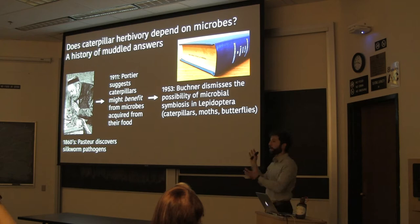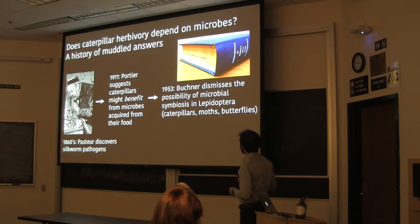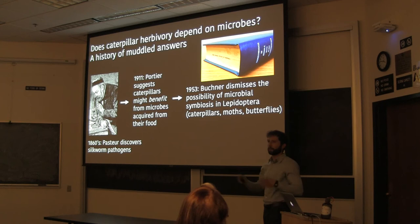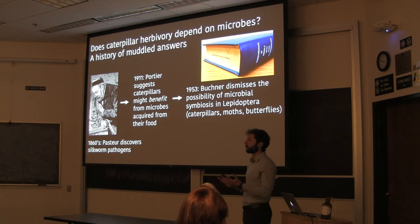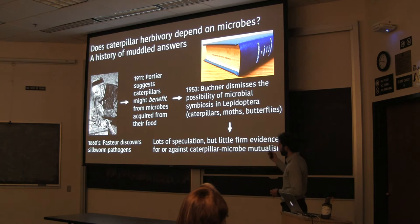Four years later, what is essentially the bible of animal microbe symbiosis was published by a German scientist named Buchner. In this entire book covering a whole range of insects and other animals, there's only one mention of Lepidoptera — the moths and butterflies and their larvae, which are caterpillars. He wrote that Lepidoptera are a group in which no symbiont bearers have been discovered, essentially dismissing the idea that caterpillars engage in symbiosis with microbes.